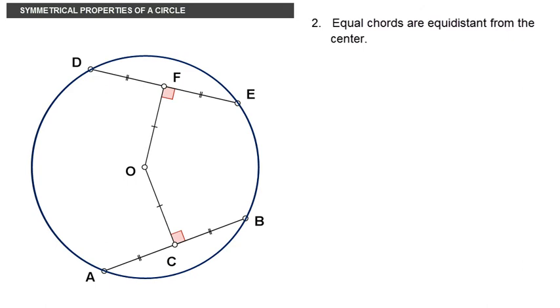The second property is an extension of the first in that it states that equal chords are equidistant from the center. What this means is that if you draw another chord DE, such that DE is equal to AB with its midpoint at F, then OC is equal to OF.